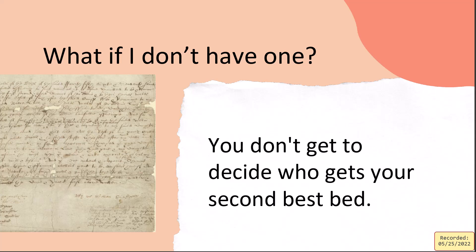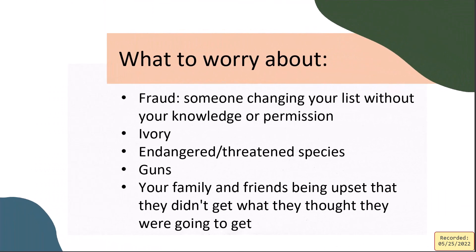If you don't have a TPP list, you get your 'second best bed' — referencing how Shakespeare famously left his second best bed to his wife. Watch out for fraud if you have items people really value. If you have something with ivory or part of an endangered species, there are federal consequences. If you want to give someone a gun, laws apply and you might need to give it through a gun trust. Talk to your family about what they want so they have some say in who gets what.